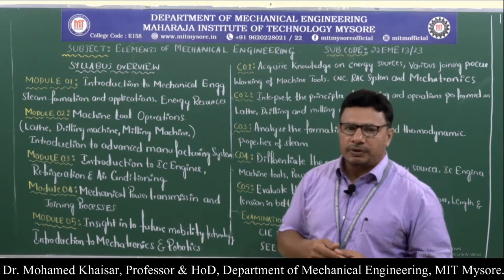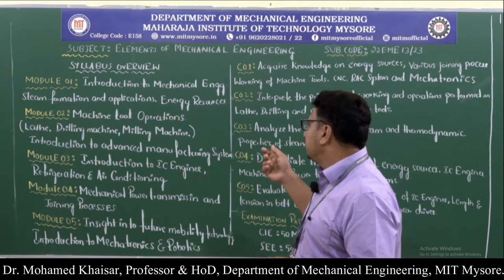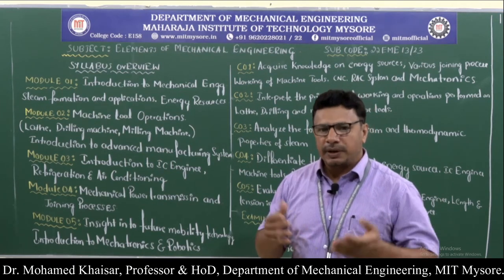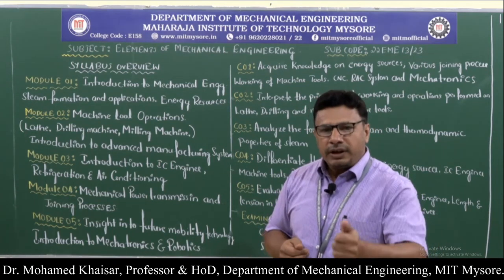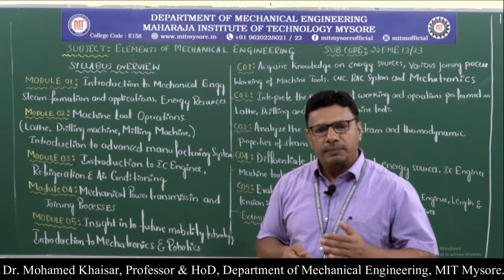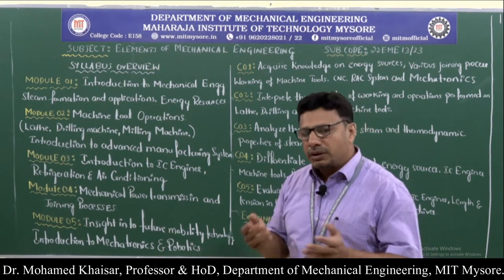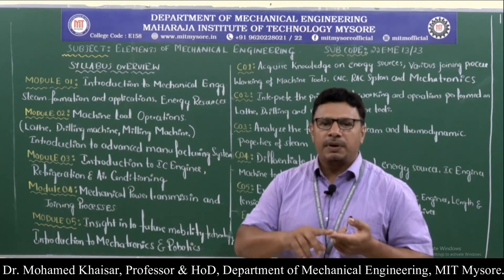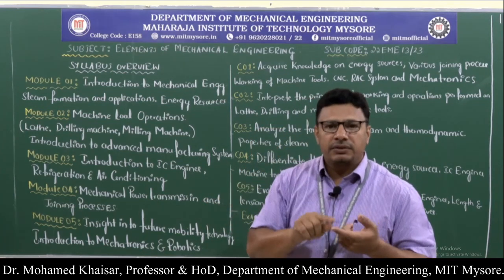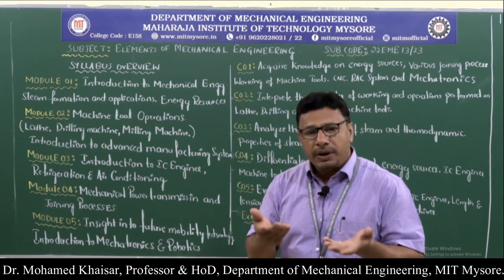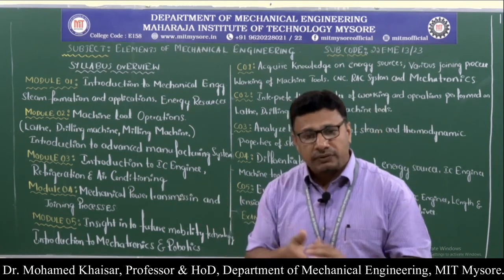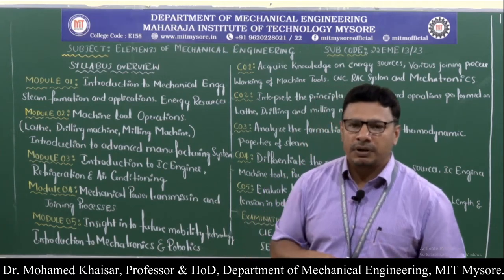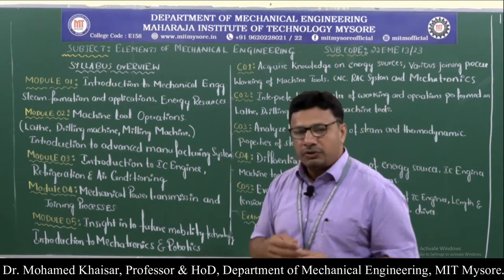Along with power transmission, Module 4 also covers joining processes. Components can be joined using glue, adhesives, rivets, fasteners (bolts, nuts, screws), soldering, brazing, or arc welding. Welding is one of the most commonly used joining methods for combining two different components into one single product. All these joining processes are an important part of manufacturing in mechanical engineering.